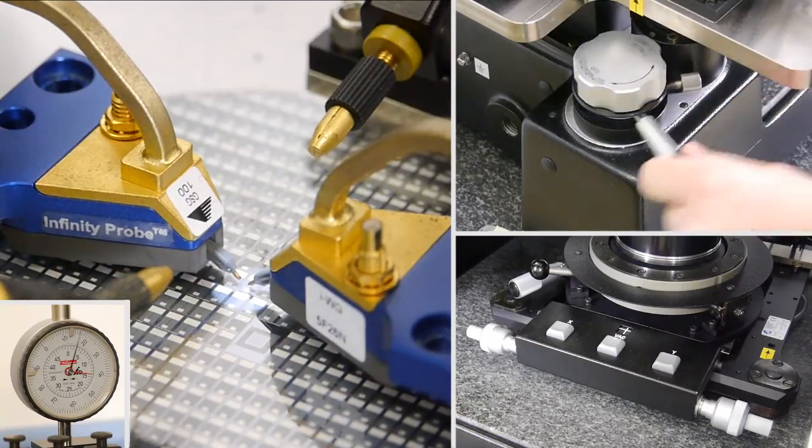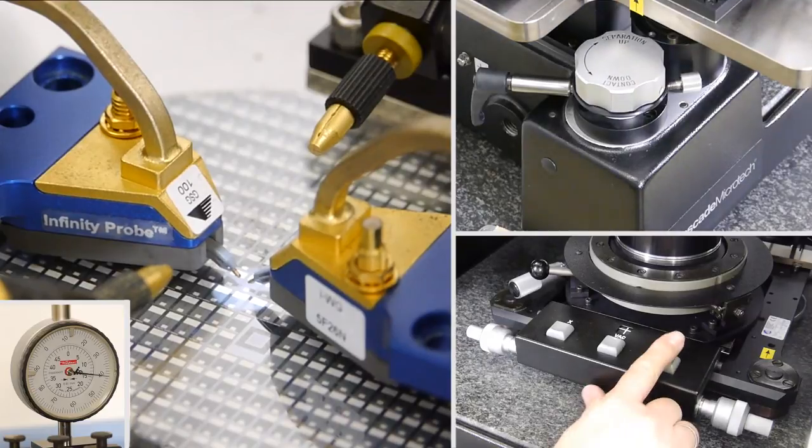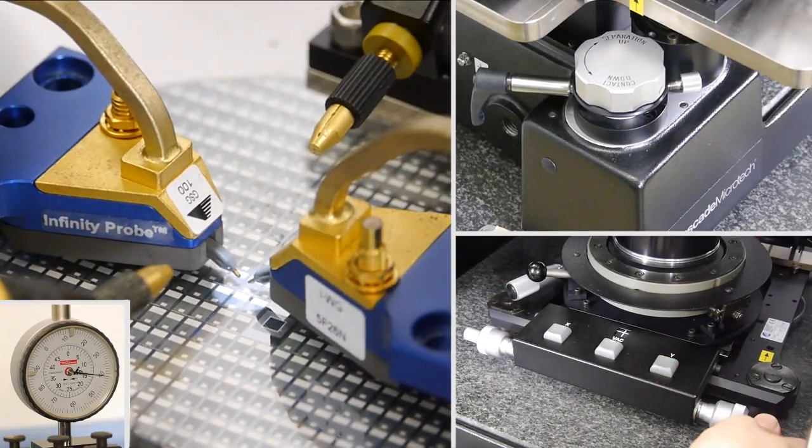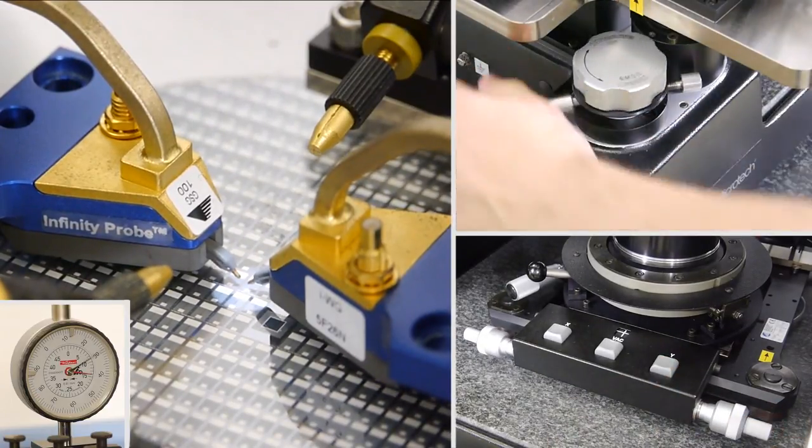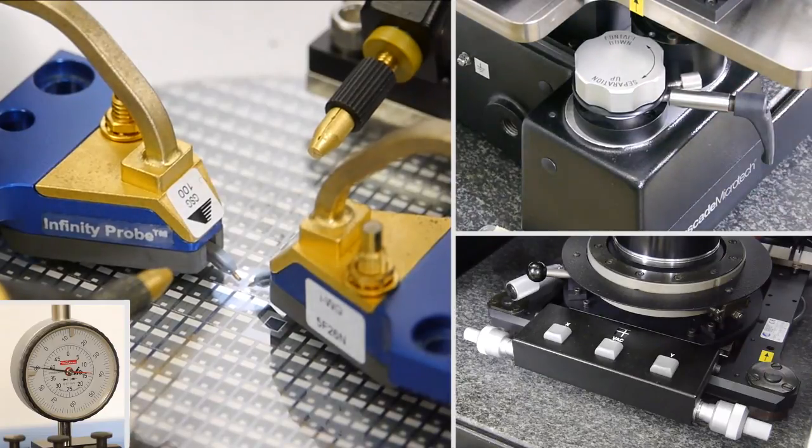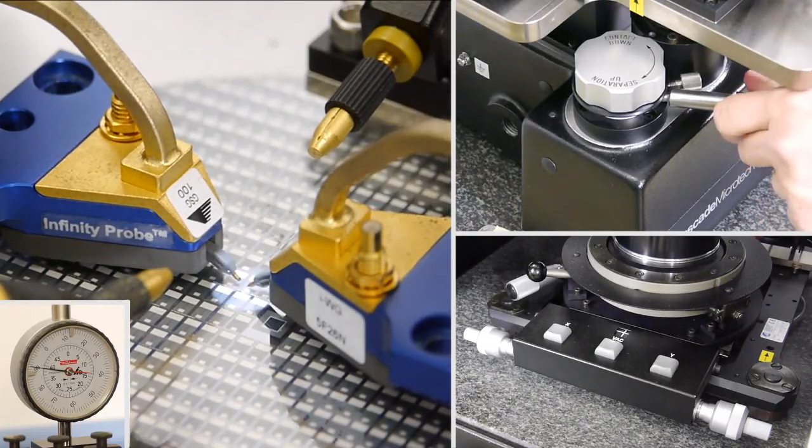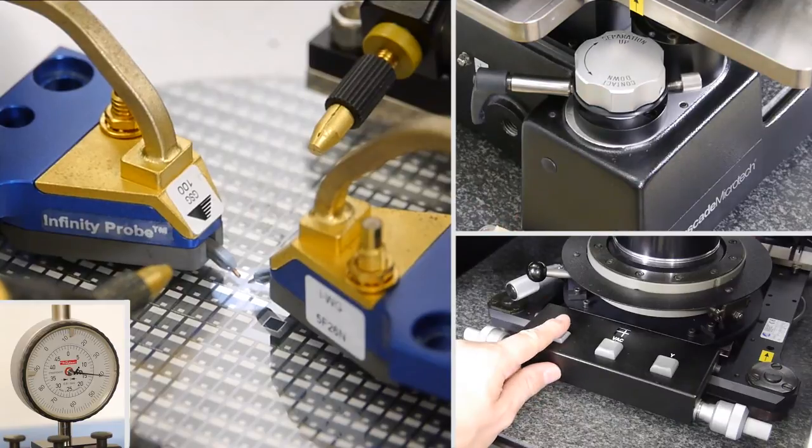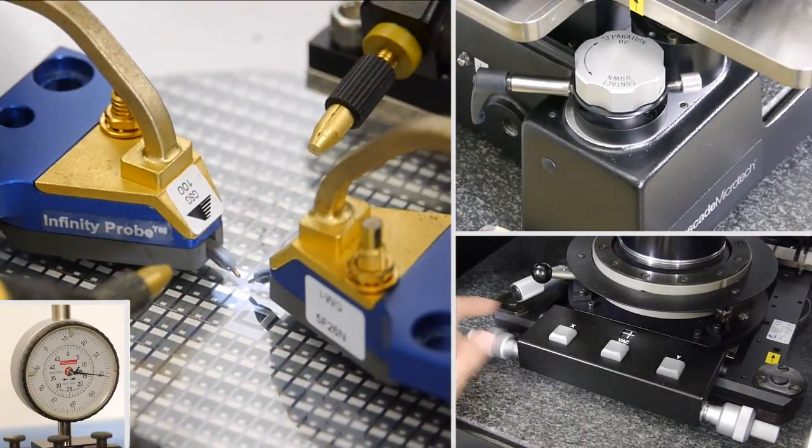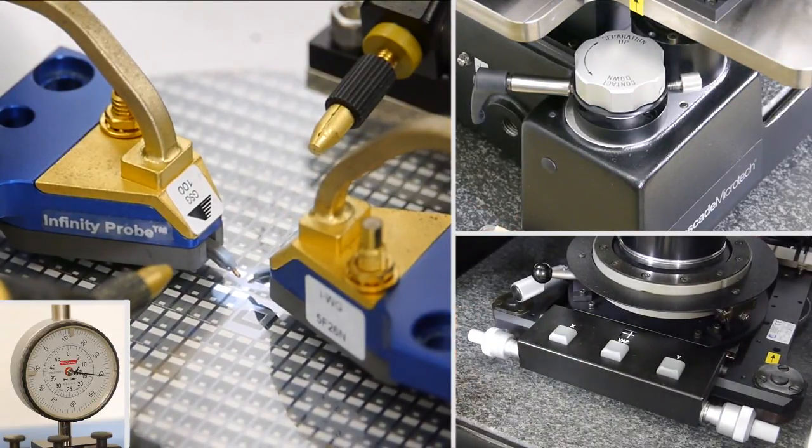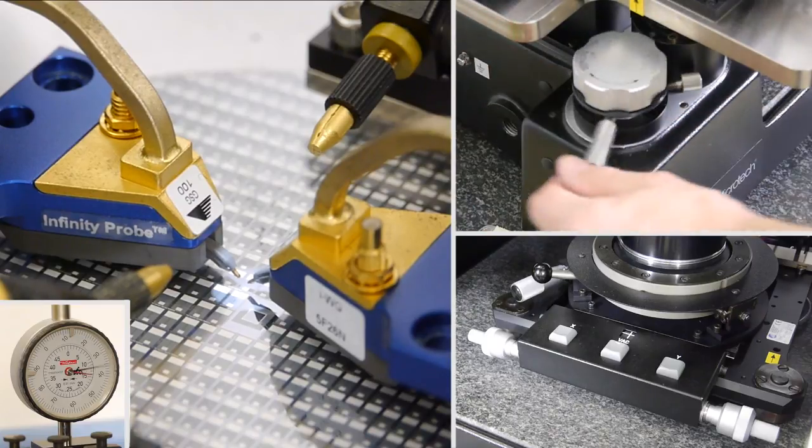Whenever you want to move to a different location, just turn the platen movement up into separation and then move to the next location and bring it back to the contact position. The precision of the probe station ensures that any contact has the same overtravel and therefore the same repeatable contact performance.